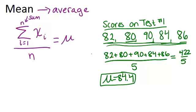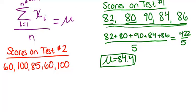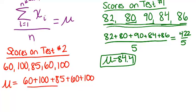Now let's look at a second set of data for another test. On this test, the scores were 60, 100, 85, 60, and 100. To figure out the average, we add up all five numbers and divide by five. What we get is 81.